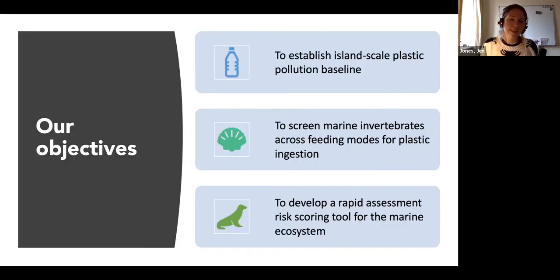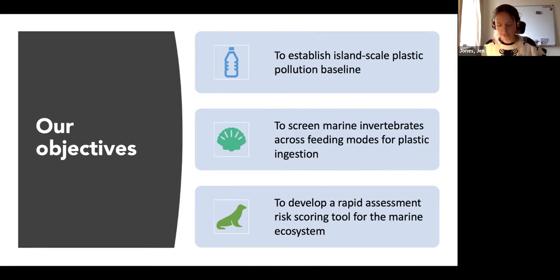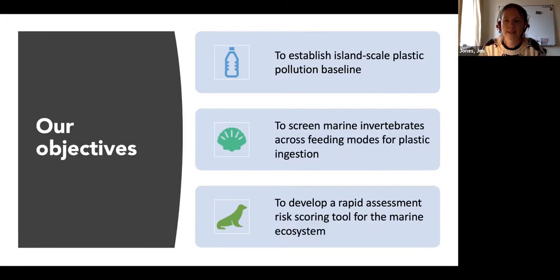Our main objectives are in three areas. One was to establish an island-scale plastic pollution baseline. As I mentioned, trying to look at different habitats in the marine environment to understand how plastics are partitioning out within the environment. We then wanted to screen marine invertebrates across different feeding modes. So we have filter feeders such as barnacles and oysters that feed on particles in the water column. We look at grazing marine invertebrates like snails and urchins that scrape surfaces to collect their food, and then also the deposit feeders, sea cucumbers.